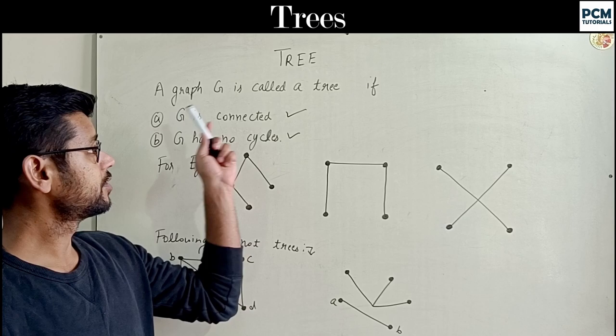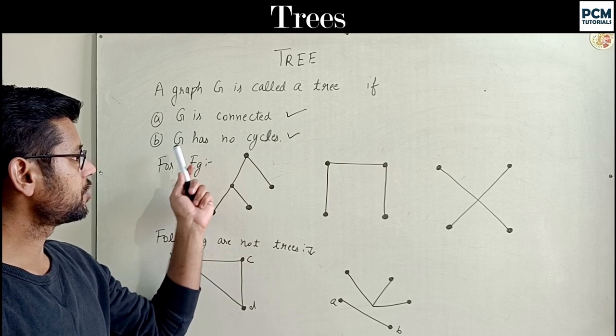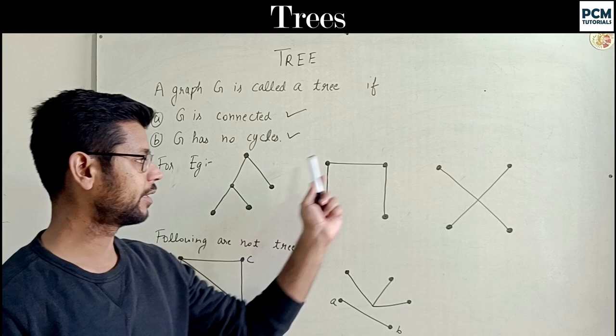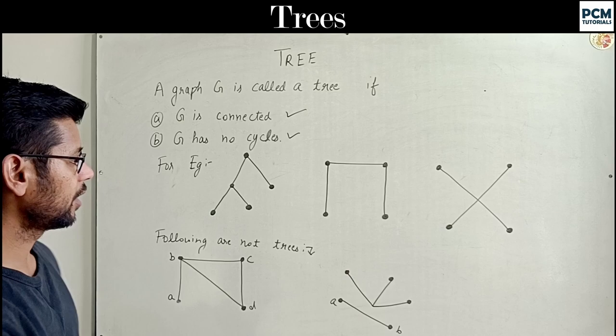What is a tree? A graph G is called a tree when G is connected and G doesn't have any cycles. For example, we have graphs — these are all graphs but conditions are different. We call some of them trees.